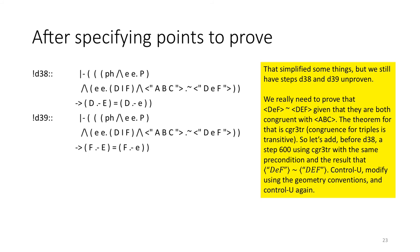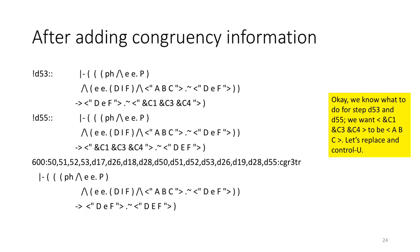That simplified things, but we still have steps D38 and D39 unproven. We really need to prove that D little eF is congruent to DEF, given they're both congruent with ABC. The theorem for that is CGR3TR, which is congruence for triples as transitive. So let's add before D38 a step 600 that uses CGR3TR with the same precondition, and the result that D little eF is congruent with DEF. CTRL-U, modify using the geometry conventions, CTRL-U again.